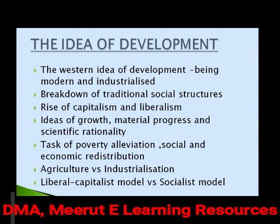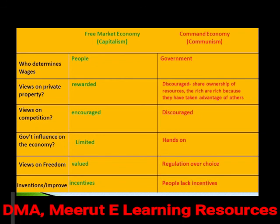Broadly, the idea of development lay between the agriculturist and the industrialized world, between the liberal-populist model and the socialist model. This included the capitalist or free market economy versus the command or communist economy. In a capitalist model, people determine everything; capitalism is merged with liberalism or democracy. Key features include private property, competition, limited government influence in the economy, individual freedom, and innovation.